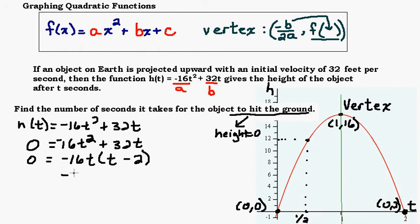Now we're going to set each factor equal to 0. So -16t = 0. If we divide both sides by -16, we get t = 0. If we add 2 to both sides, we get t = 2.